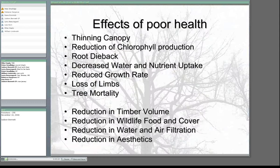Some of the effects of poor health: on an individual tree level, we have a reduction in the canopy — it thins out — and a reduction in chlorophyll, which leads to overall decline in individual tree health, root dieback, decreased water and nutrient uptake, reduced growth rates, loss of limbs, and eventually tree mortality. Overall, we'll see reductions in timber volume, wildlife food and cover, water and air filtration, and overall reduction in aesthetics. If you've ever been in a forest with really low forest health, you can just tell — the trees are all relatively sickly and it kind of feels different.